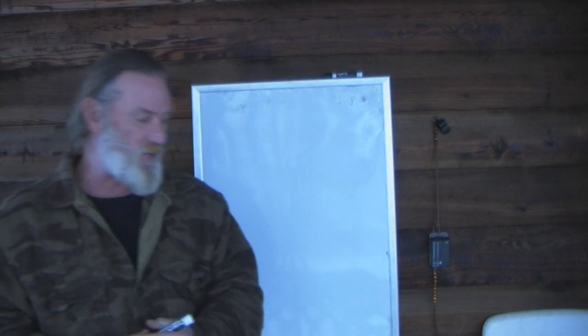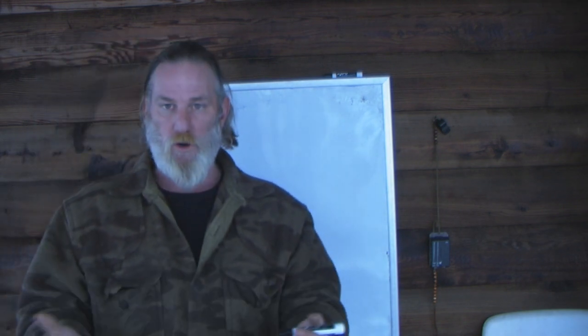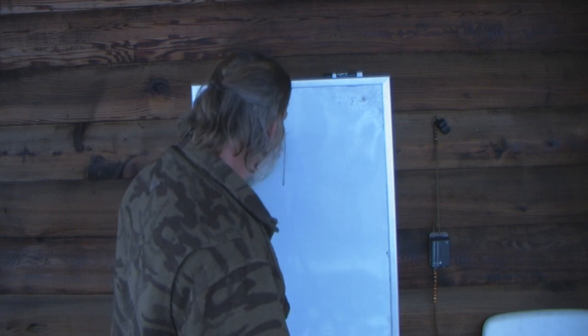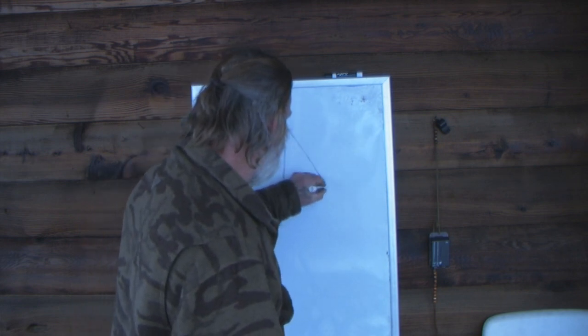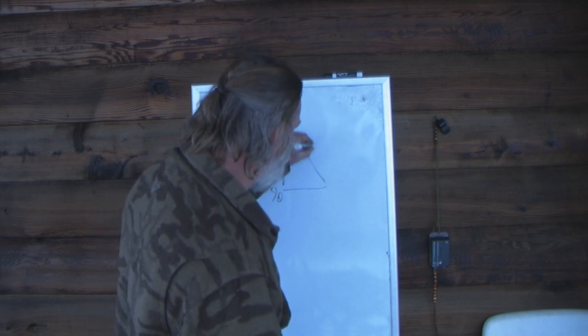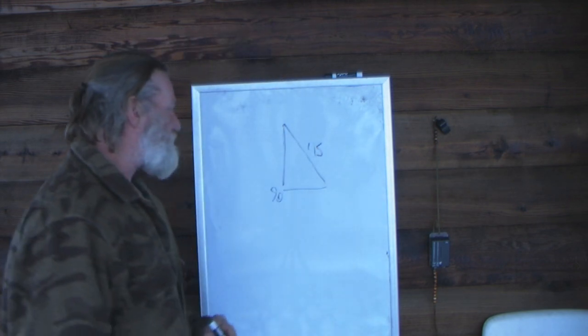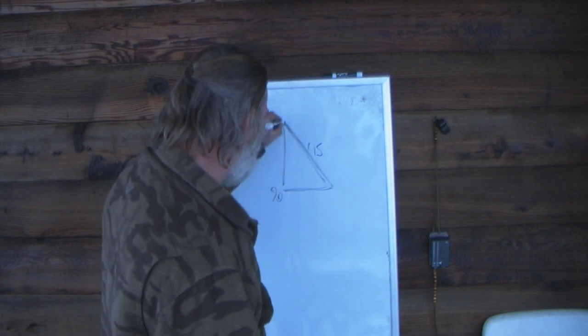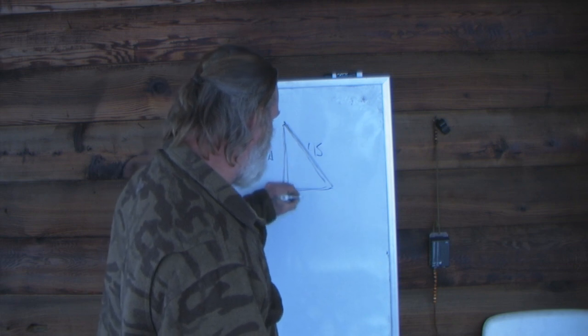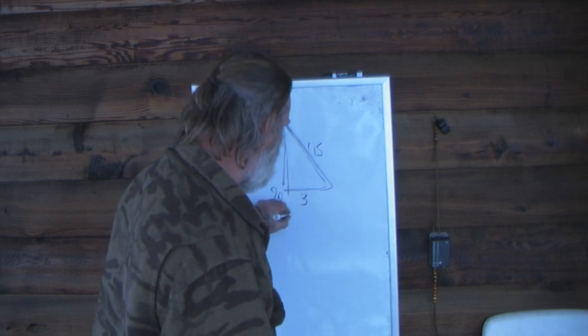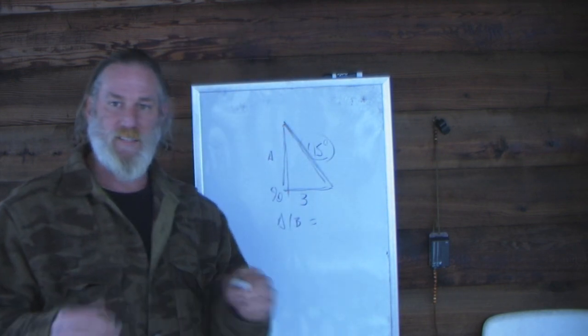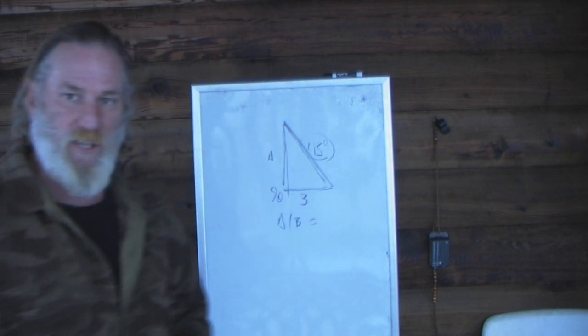The next thing that we need to understand is we need to understand a tangent table. In a tangent table, in its most simple terms, basically for a triangle, if I have a triangle, I always want a 90 degree angle here, which means I need a 45 degree angle here. If this angle is 45, that means this and this are going to be equal distances. A and B will be equal distances if this is a 45 degree angle.